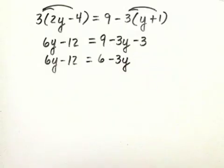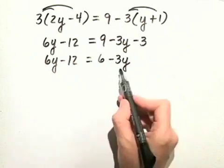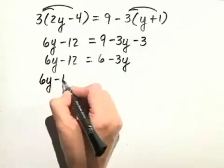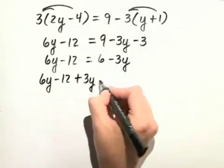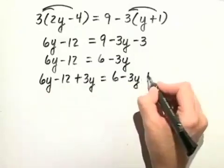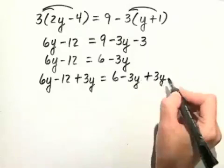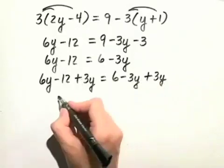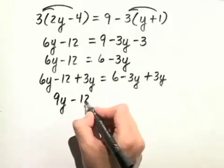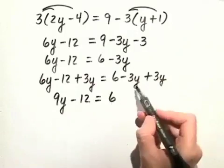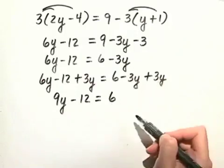Now let's move the variable y to the left-hand side. We'll do that by adding 3y to both sides. So we have 6y minus 12 plus 3y equals 6 minus 3y plus 3y again. On the left-hand side, we combine the like terms, and we get 9y minus 12 equals, on the right-hand side, we just have 6, because negative 3y plus 3y add to 0.